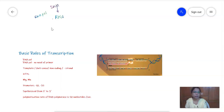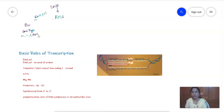Transcription is the basic step for gene expression. As we have seen in a previous video, in prokaryotes there is one type of RNA polymerase which synthesizes all the RNAs — mRNA, rRNA, as well as tRNA. In eukaryotes, there are three types of RNA polymerases.